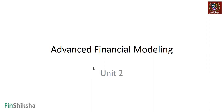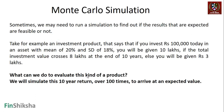Sometimes you may need to run a simulation to find out if the results being stated for a particular investment instrument are feasible. Take for example an investment product that says: if you invest 1 lakh rupees in an asset with a mean of 20% and standard deviation of 18%, you will be given 10 lakhs if the total investment value crosses 8 lakhs at the end of a 10-year tenure, else you will get 3 lakhs. This is a contingent payoff.